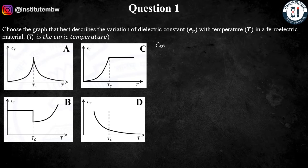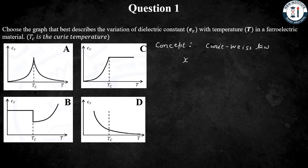The concept in this question is the Curie-Weiss law. It says that susceptibility for a material is C over T minus TC, where C is a constant.